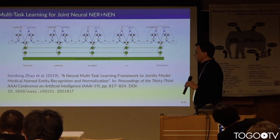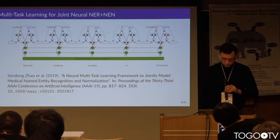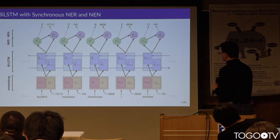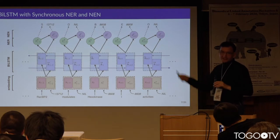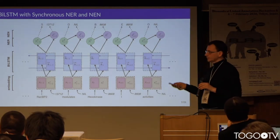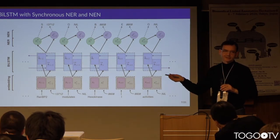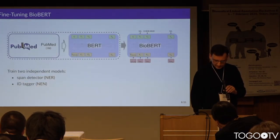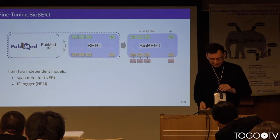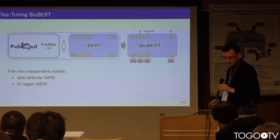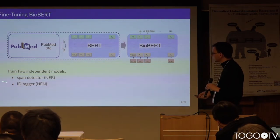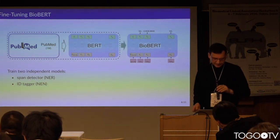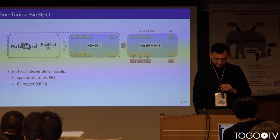The problem with this kind of architecture is that it's very difficult and expensive to train. Our own approach used an idea based on the previous reference, but we cut one of the links — we train only the entity disambiguation step on the basis of the entity recognition step, so it's only one-step feedback. We also tested a different architecture based on BioBERT, where we have two independent models: one for detecting spans and one for detecting IDs.